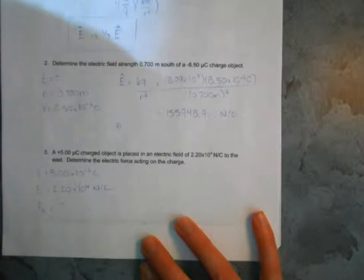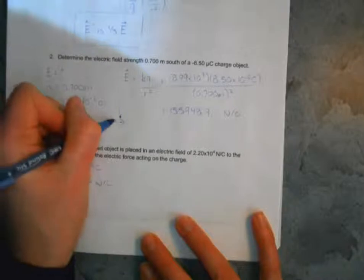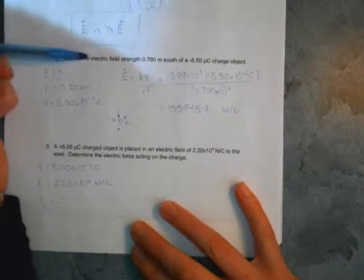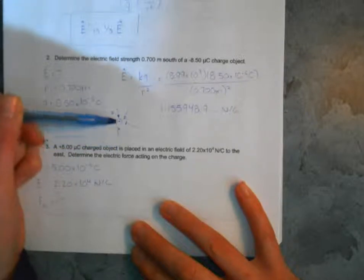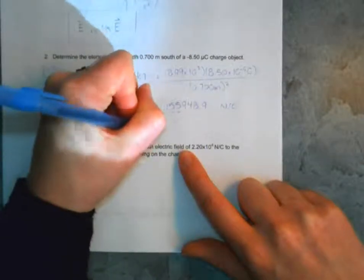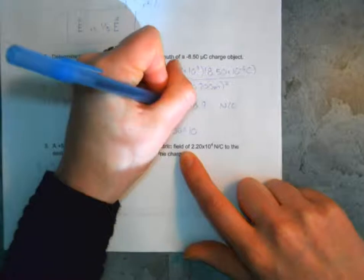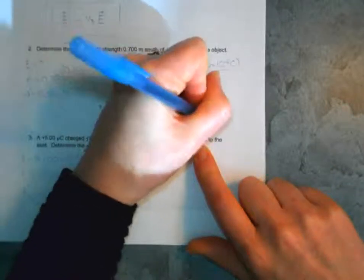We're 0.7 meters south of the object, so the field at that point is directed toward the object — pointing north. Rounding to three significant figures, E = 1.56 × 10⁵ newtons per coulomb, north.